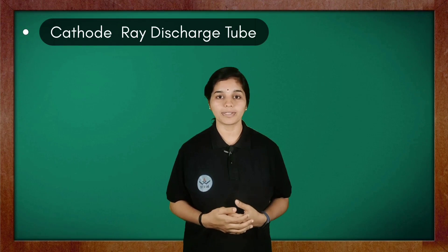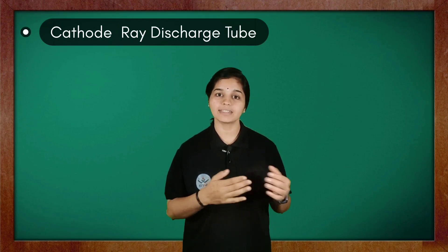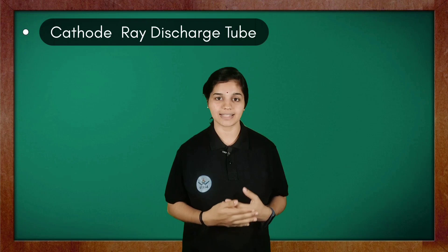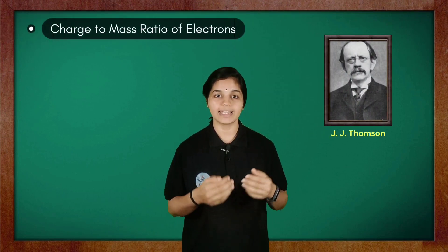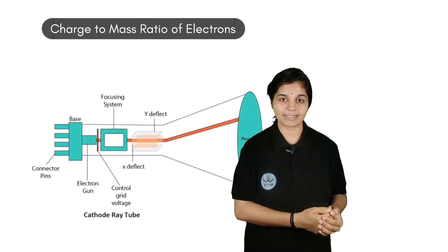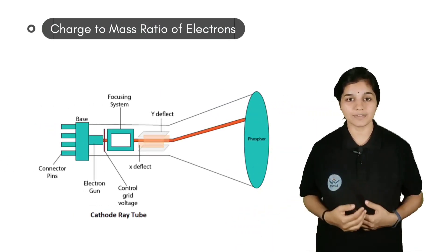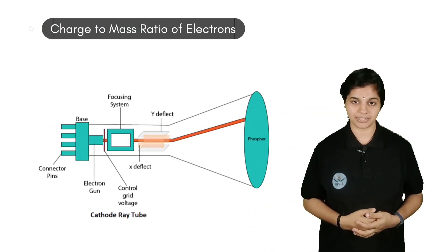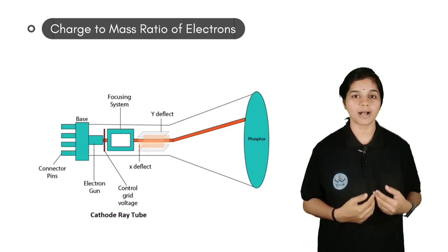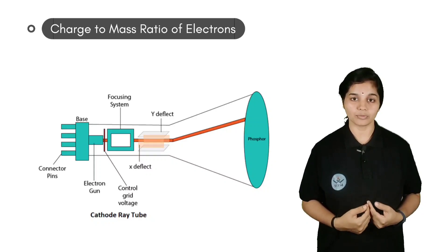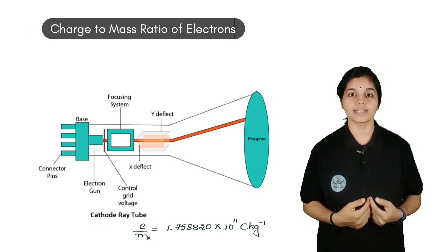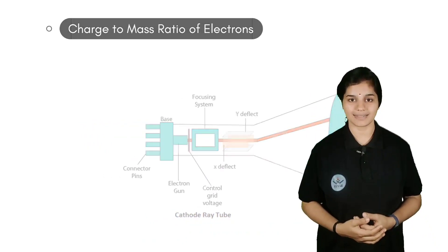Also, the properties of cathode rays were not dependent on the gas taken inside the glass tube. Later on, J.J. Thomson studied the deflection of cathode rays in the presence of electric and magnetic field as well as in the absence of electric and magnetic field. From this, he found out the charge to mass ratio of the electron, which came out to be 1.75 × 10¹¹ coulomb per kg.